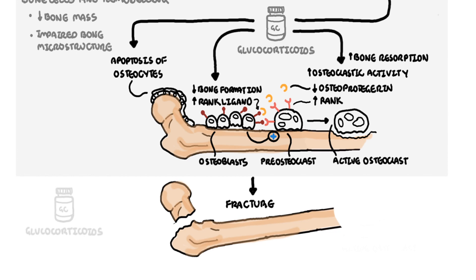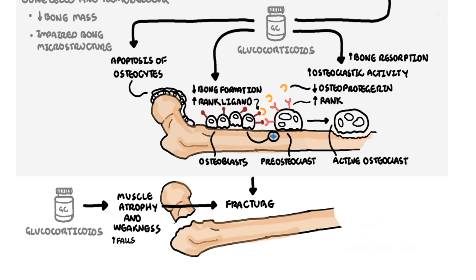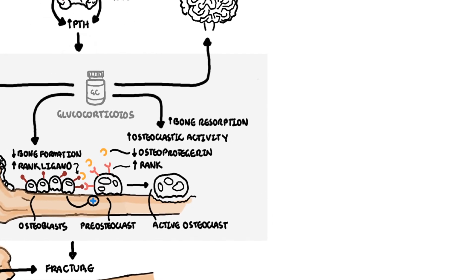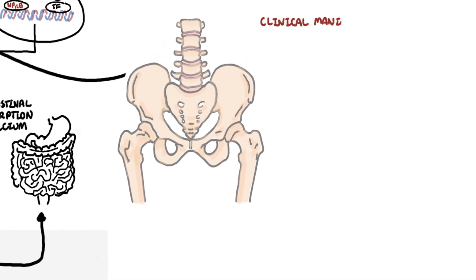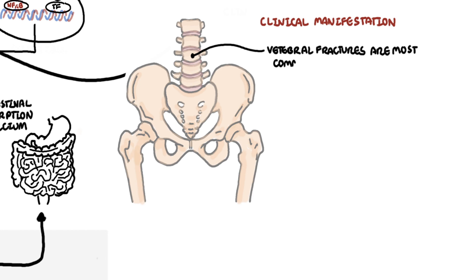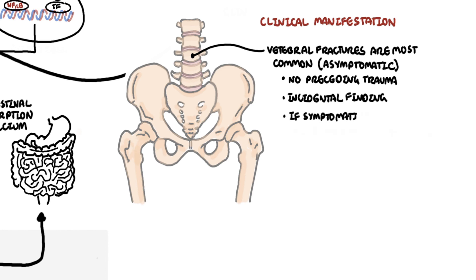Indirect glucocorticoid effects that also predispose patients to an increased risk of fractures include reduced muscle mass and weakness, leading to an increased risk of falls. Regarding clinical manifestations of glucocorticoid-induced osteoporosis: vertebral fractures are the most common glucocorticoid-induced fractures and are often asymptomatic, diagnosed as an incidental finding on chest or abdominal radiograph. The typical symptomatic patient presents with acute back pain after sudden bending, coughing, or lifting.